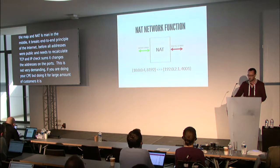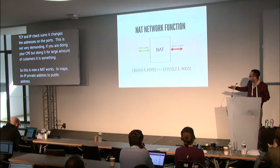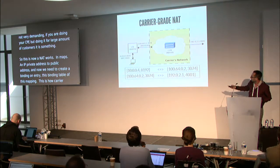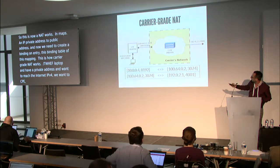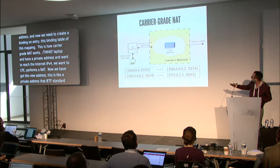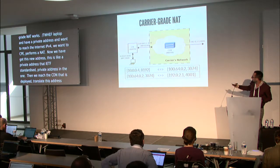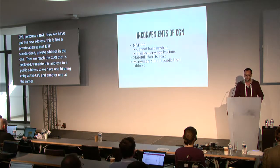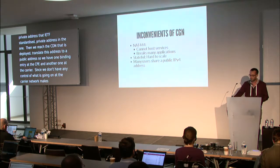This is how NAT works — it maps a private address to a public address and creates a binding entry. This is how carrier-grade NAT works: a laptop has a private address, wants to reach the IPv4 internet, goes to a CPE which performs NAT, giving it a new address from the IETF-standardized shared address space. Then it reaches the CGN deployed at the carrier. So we have one binding entry at the CPE and another at the carrier-grade NAT. Since we don't have control of what's going on in the carrier network, NAT 4-to-4 carrier-grade NAT makes it more difficult to host services in client networks and breaks many applications.